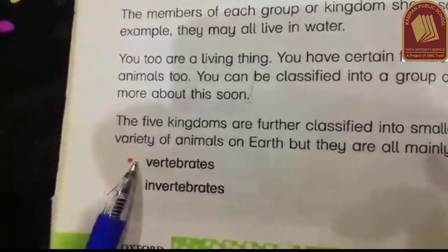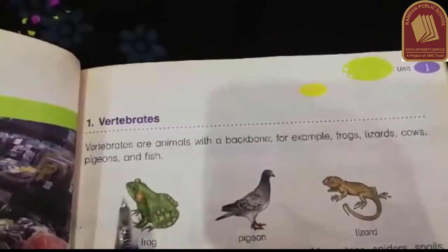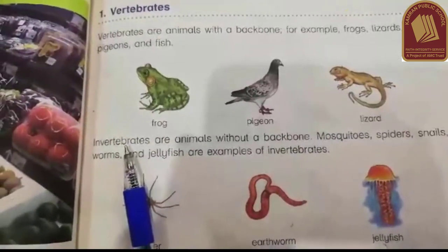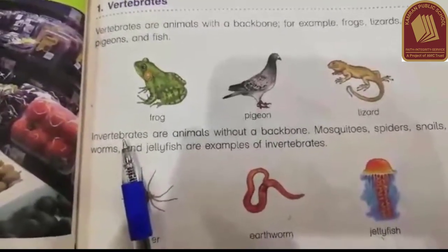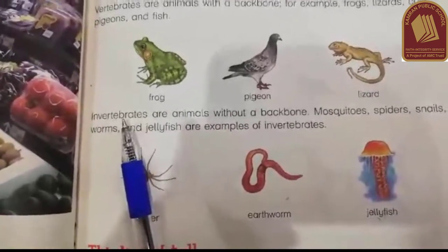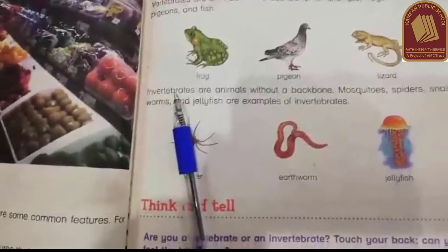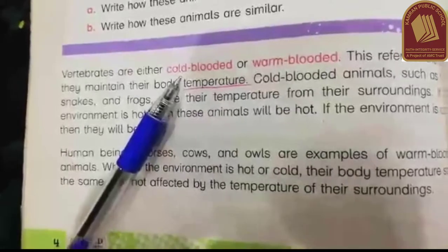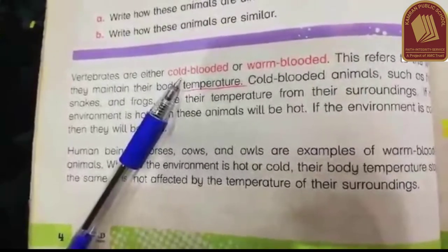Vertebrates are living organisms which have a backbone. Invertebrates are those which have no backbone. Within vertebrates and invertebrates, there are two types of living organisms — cold-blooded and warm-blooded.